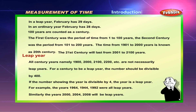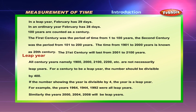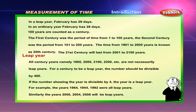Leap Year. All Century Years, namely 1900, 2000, 2100, 2200, etc., are not necessarily leap years. For a Century to be a leap year, the number should be divisible by 400.